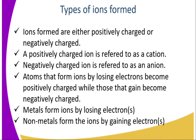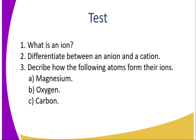Types of ions that are formed: ions are either positively or negatively charged. Positively charged ions are referred to as cations, while negatively charged ions are referred to as anions. Atoms that form ions by losing electrons become positively charged, while those that gain electrons become negatively charged. Metals form ions by losing electrons, while non-metals form ions by gaining electrons — that is a very important point which helps us identify a metal and a non-metal.